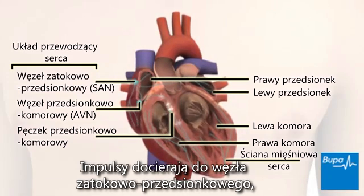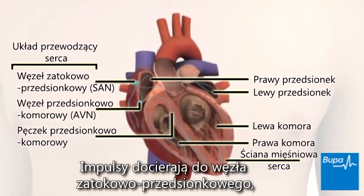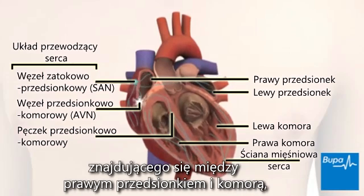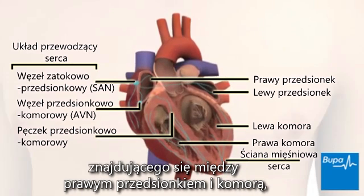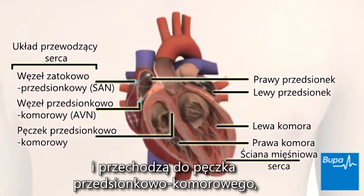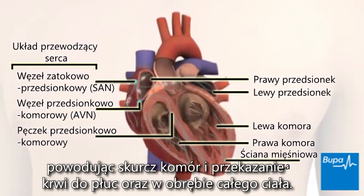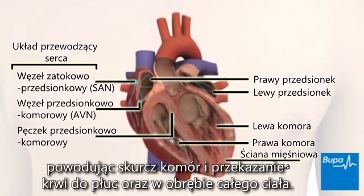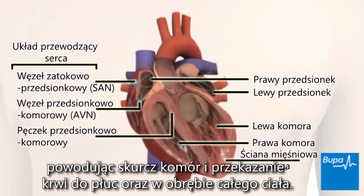The impulses reach the atrioventricular node, which is between the right atrium and ventricle, and pass onto the atrioventricular bundle, causing the ventricles to contract and send blood to the lungs and around the body.